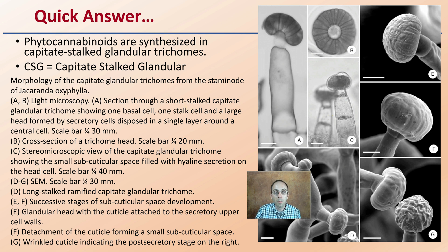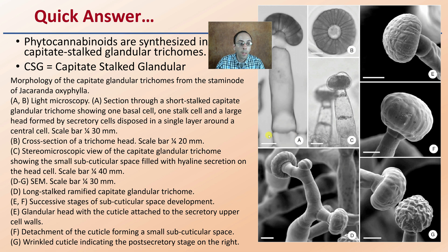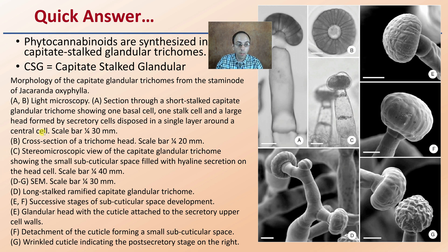If that's all you wanted, you're welcome to leave the video at this point — we have a lot more detail to get into. I've provided great images to really look at the details of these trichome structures. We're looking at light microscopy in A and B — a side shot as well as a top-down cross-section. We're also getting into SEM, scanning electron microscope images, which provide a great level of detail. Scale bars give you an idea of size, and the letters correspond with the captions presented.